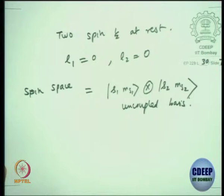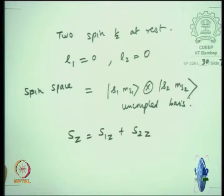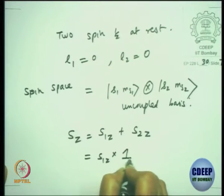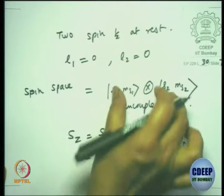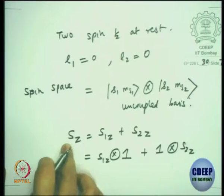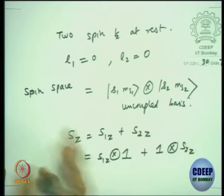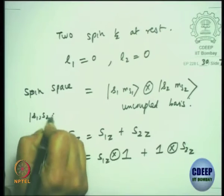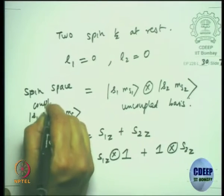You could also write the total spin. You can write the total SZ as S1Z plus S2Z. In the coupled basis, this should technically be treated as S1Z ⊗ I plus I ⊗ S2Z in this direct product space. I can also take the coupled basis where it is total SZ and total S, and write a coupled basis as |S1, S2, S, MS⟩. This is the coupled basis.